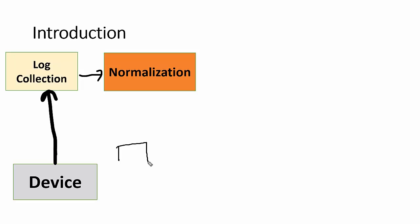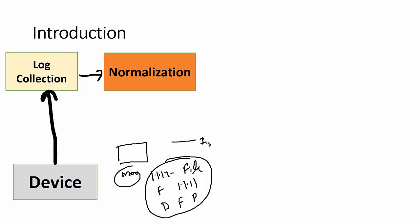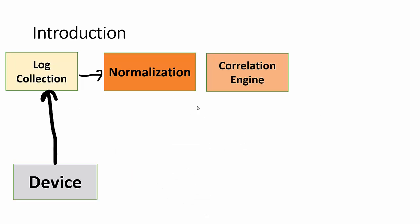For example, in Microsoft Windows a log entry might start with IP then filename, in a router it starts with filename then IP, and in Linux it starts with date then filename then other parameters. Normalization consolidates these into one consistent structure — for instance: IP, file, date. Each SIEM handles normalization differently, but the end result is that all logs look the same in the SIEM, making them simpler to read and enabling standard rule generation.